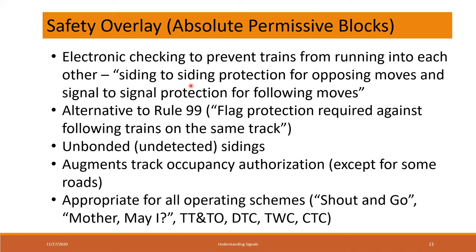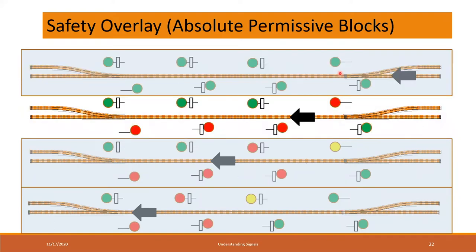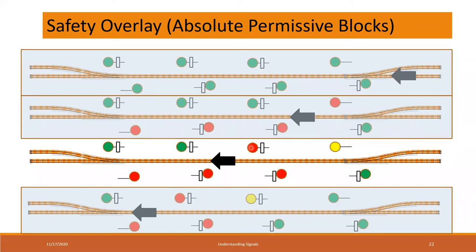APB is electronic checking to prevent trains from running into each other. The official wording is: it's siding-to-siding protection for opposing moves and signal-to-signal protection for following moves. With APB, a train again goes westbound and approaches the first signal. We've got an absolute signal protecting the entry onto the single track. As soon as the locomotive passes the head signal, it turns red. In addition, all the opposing signals drop down to red as well - this is often called tumble down. So if a train came from the other direction, he would see the absolute signal is red, stop, and wouldn't enter the single track.